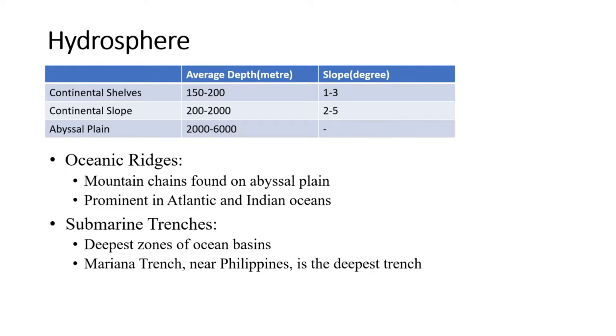And almost one-fourth of the world's petroleum and natural gas is extracted from these continental shelf regions. It covers about seven to eight percent of the area of the ocean basin.